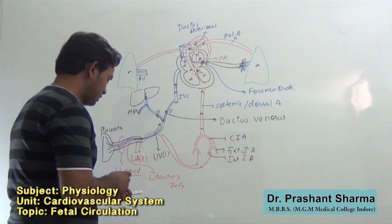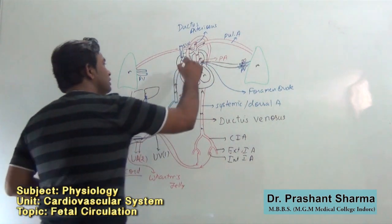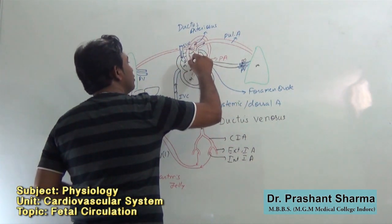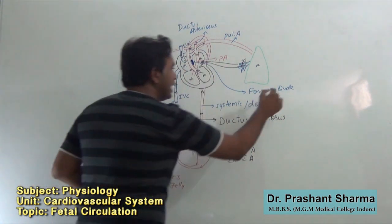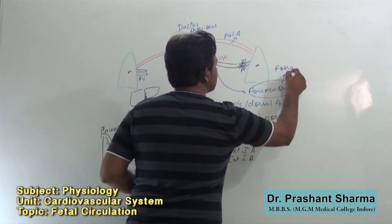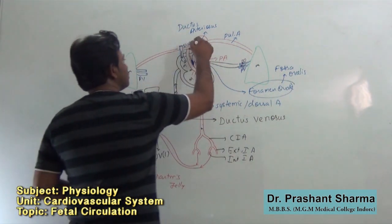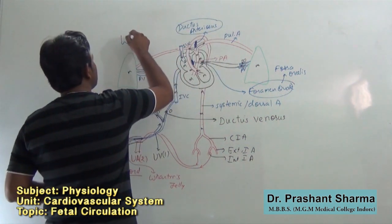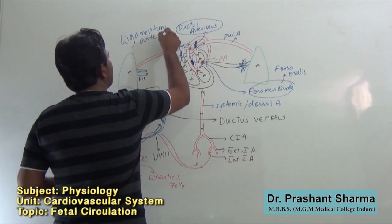Now, what changes occur after birth or at the time of birth? At the time of birth, anatomical and functional closure of the foramen ovale occurs, and this becomes the fossa ovalis. The ductus arteriosus also closes into a fibrous ligament structure known as the ligamentum arteriosum.